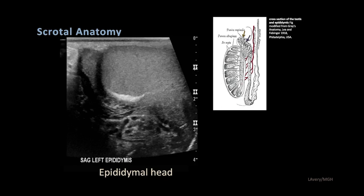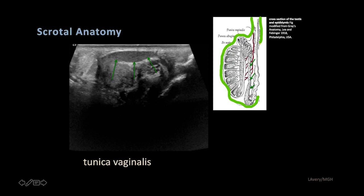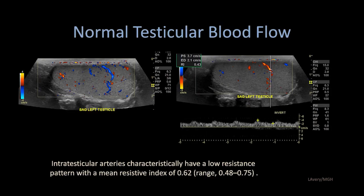Exiting the testicle, we come to the epididymal head — a nice triangular appearance, homogeneous in echo texture, extending down into a very thin, narrow epididymal body and tail. The entire epididymis and testicle are invaginated in the tunica vaginalis, which is a reflection of the peritoneum as it descends through the inguinal canal. Normal testicular blood flow shows normal, low-resistant blood flow within the testicle, with maintained diastolic flow throughout the entire cycle.